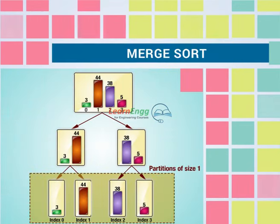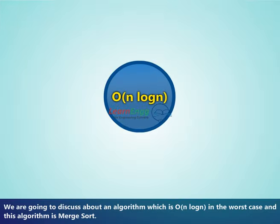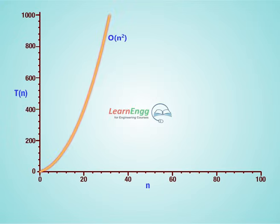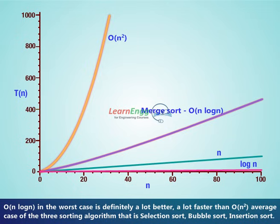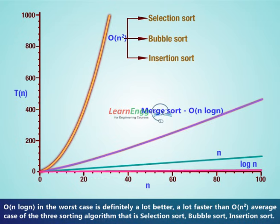In this video, we will study, discuss and analyze the merge sort algorithm. We are going to discuss one algorithm whose worst case is O(n log n), and this algorithm is merge sort. O(n log n) in the worst case is definitely a lot better and a lot faster than O(n²), which is the average case of the three sorting algorithms: selection sort, bubble sort, and insertion sort.